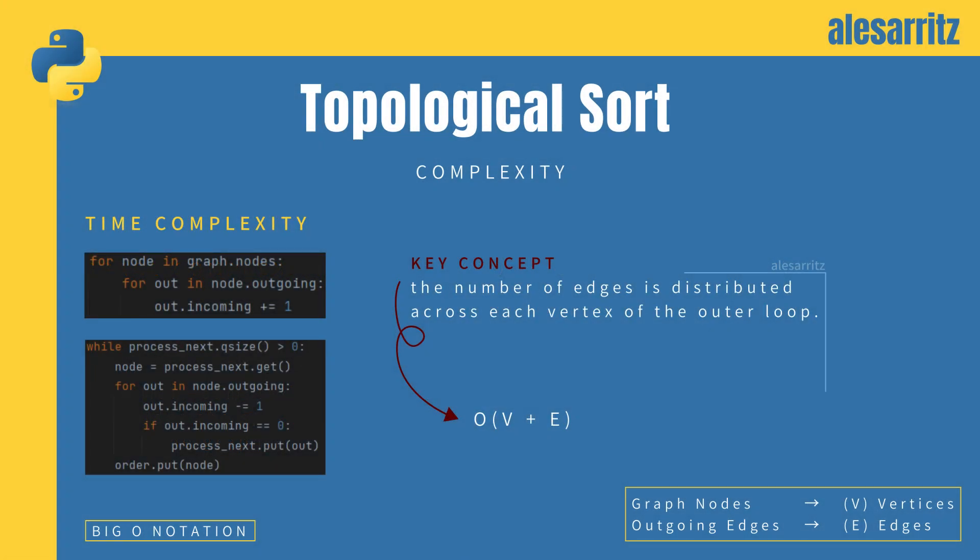The time complexity is a bit trickier to obtain. The presence of two nested loops in the two pieces of code that determine the algorithm's complexity could make you think that the complexity derives from the multiplication of the number of vertices and the number of edges, but that's not correct. The key concept here is that the number of edges is distributed across each vertex of the outer loop, and this leads to a complexity of V plus E.